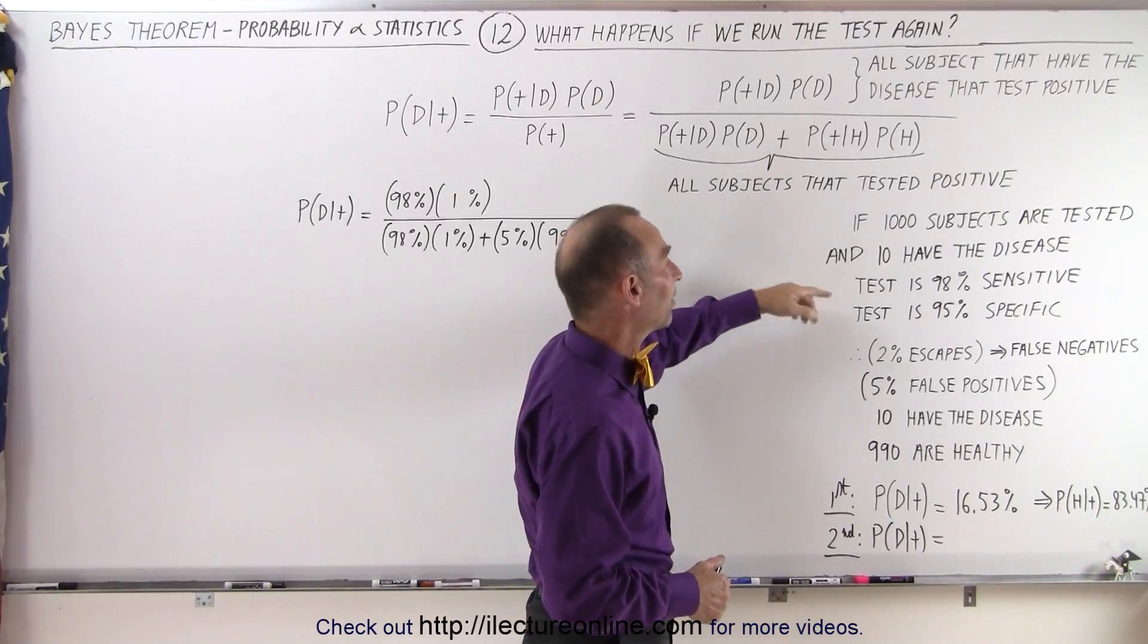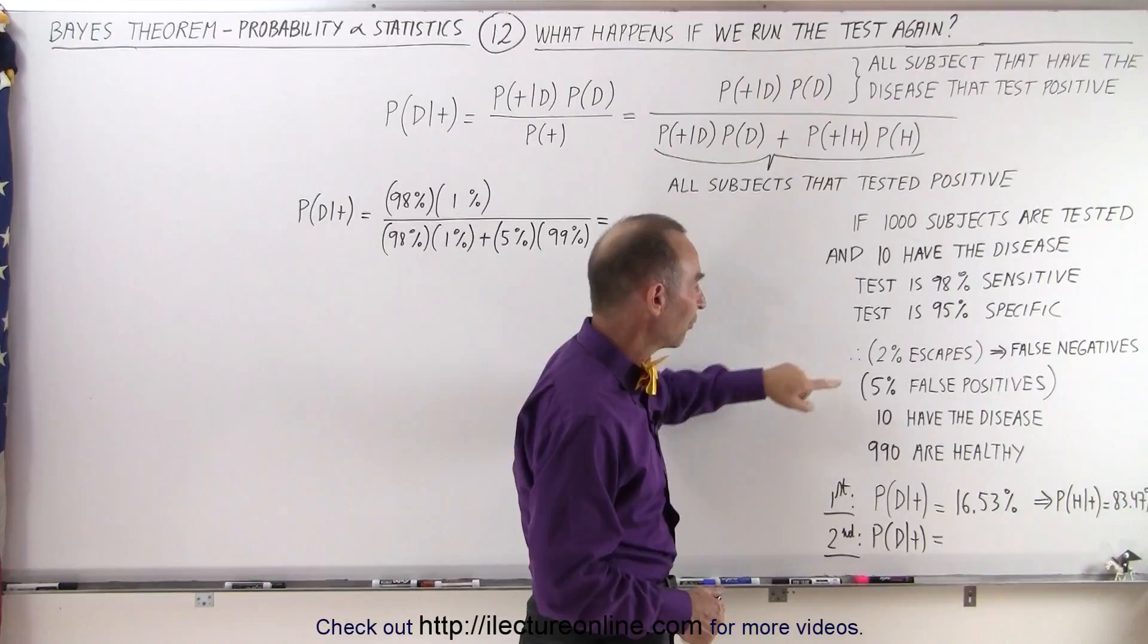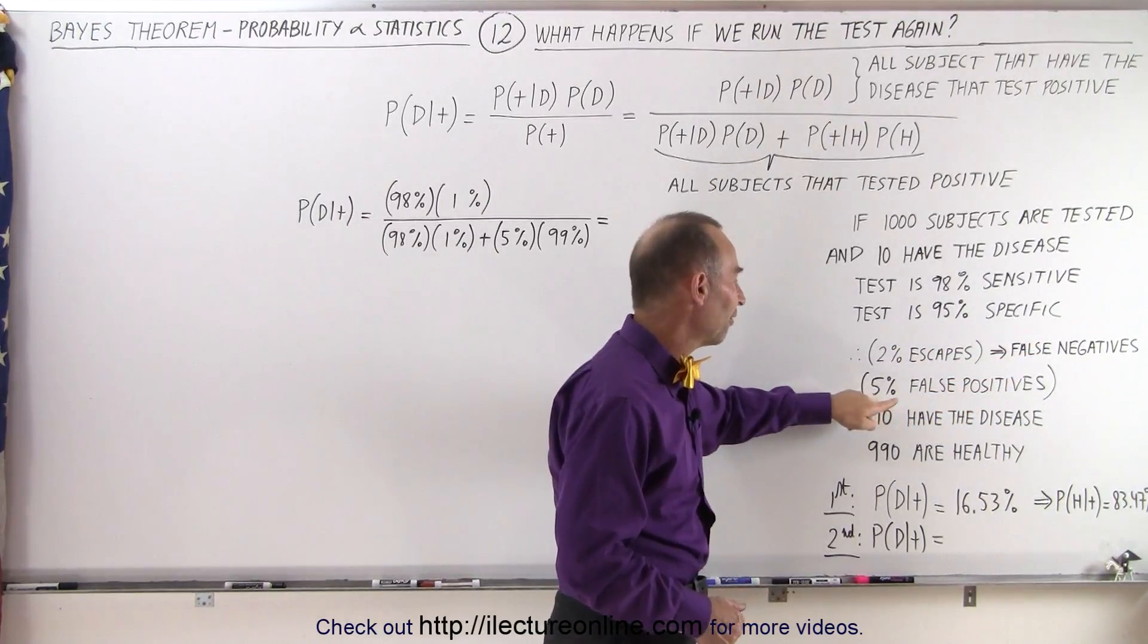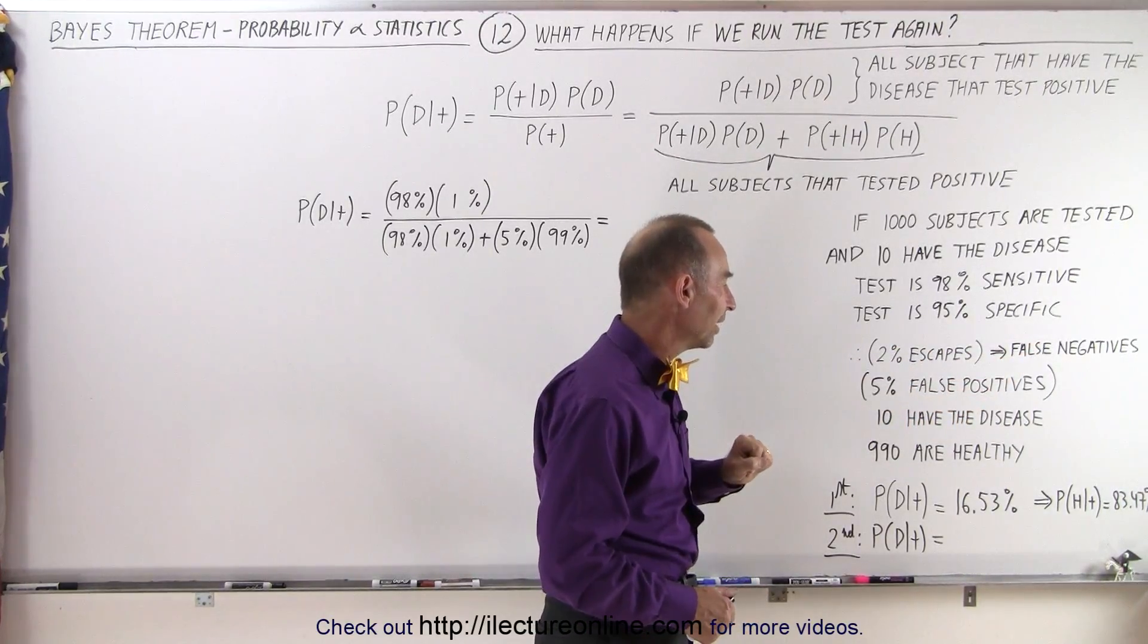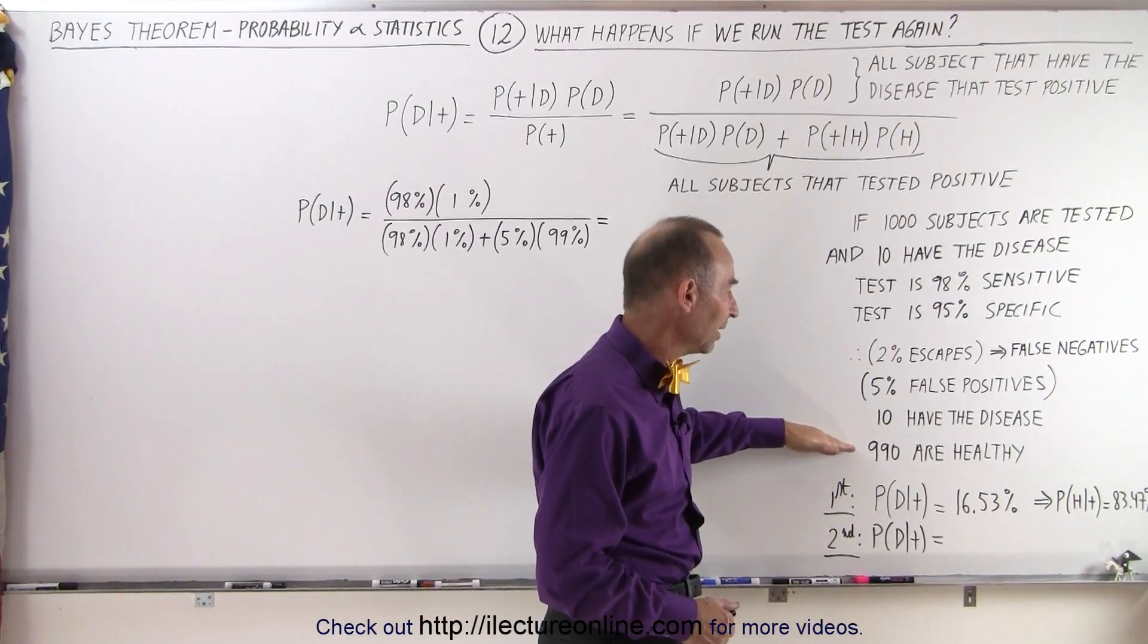Let's say we use a test that is 98% sensitive, 95% specific, therefore we have 2% false negatives, 5% false positives, and if 10 have the disease out of a thousand and 990 are healthy,